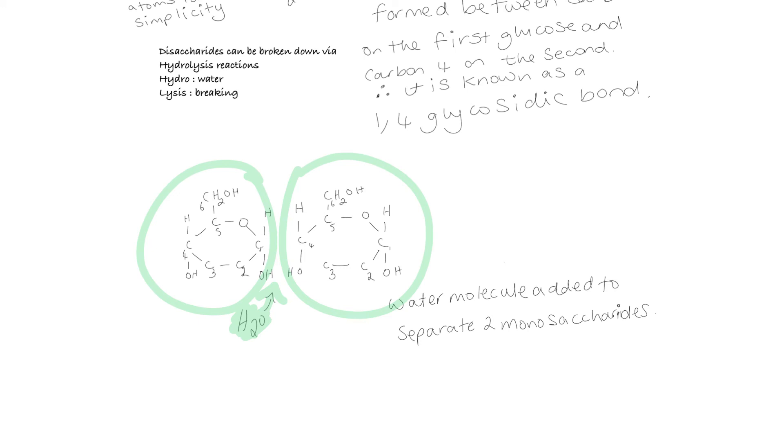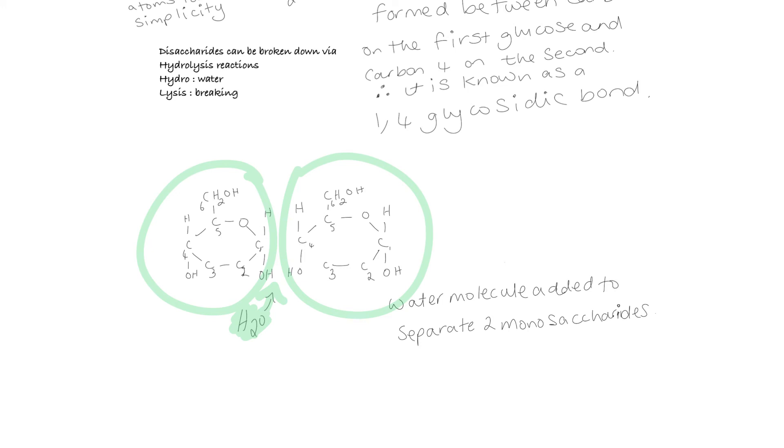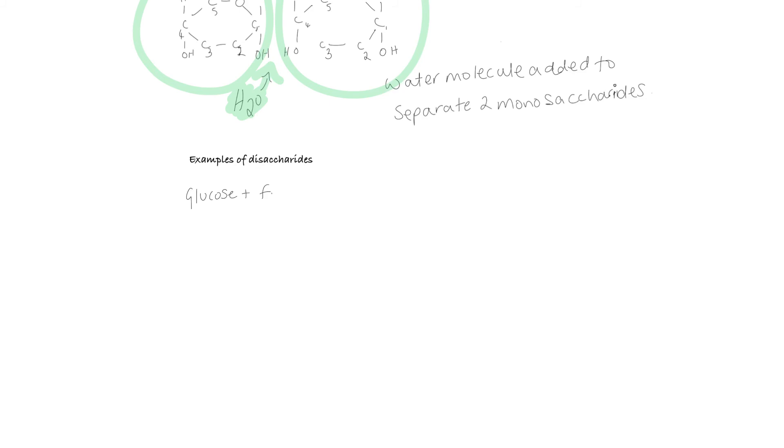Let's take a minute to look at a few examples of disaccharides. Glucose plus fructose gives us sucrose, glucose plus galactose gives us lactose, and glucose plus glucose gives us maltose. In turn, if we broke down sucrose, we would get glucose and fructose. If we broke down lactose, we'd get glucose and galactose. If we broke down maltose, we'd get glucose and another glucose molecule. All of these are alpha glucose molecules. You might remember from GCSE that the enzymes used for breaking these down would be sucrase, lactase, and maltase.